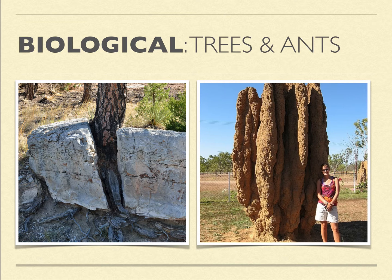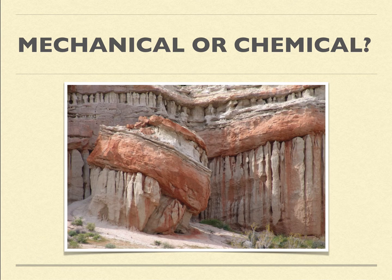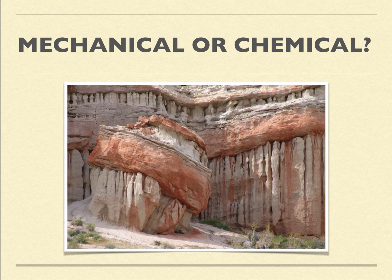Let's try a couple of examples. Here's a photo — is this mechanical, chemical, or both? If you guessed that part of it was chemical because of the red oxides, you'd be correct. If you see that this large piece of rock looks like it must have fallen from somewhere — that's a process of mechanical weathering — then you're also correct.